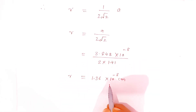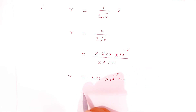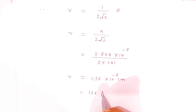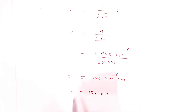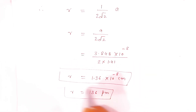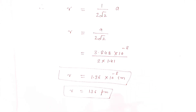So the radius of the iridium atom is 1.36 × 10⁻⁸ cm. If you want to express it in picometers, it converts to 136 pm — since 10⁻¹⁰ m equals 1 picometer. Both answers are correct: one in picometers and one in centimeters. This is how you write the solution in the examination to get full marks.